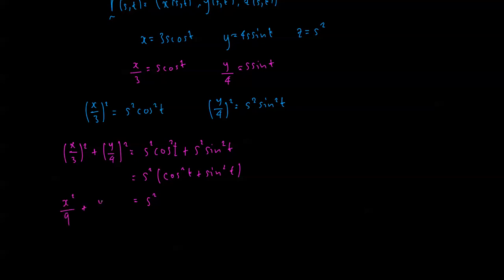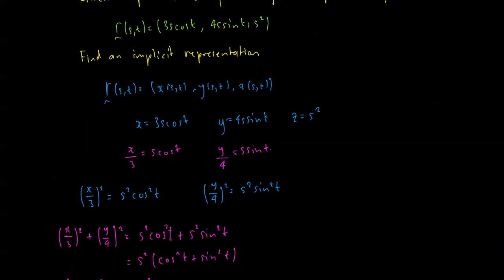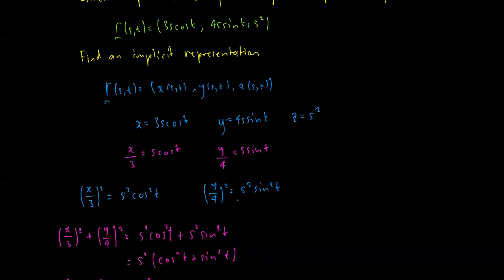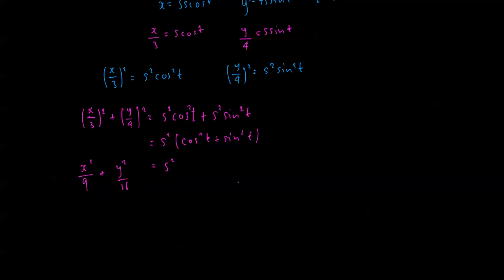we have x²/9 + y²/16. Going back to the parameterization, z = s², which is our right-hand side. So we end up with x²/9 + y²/16 = z.